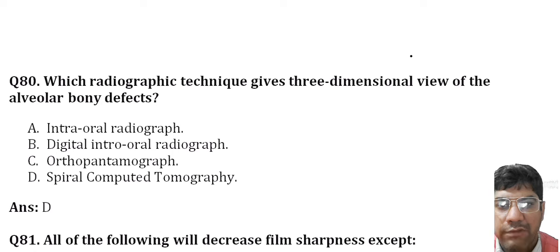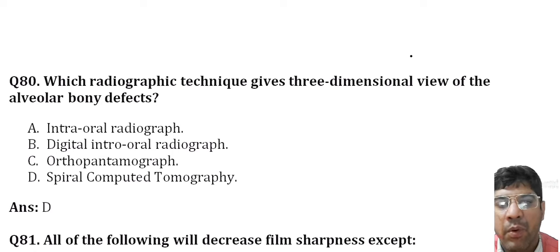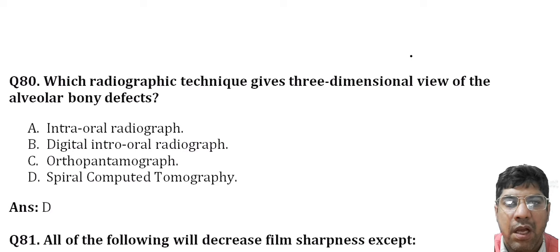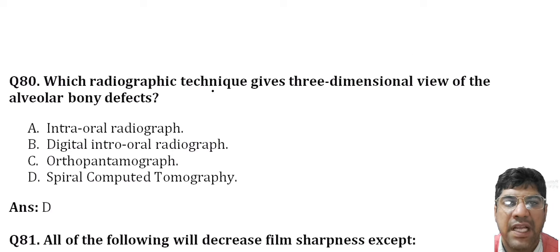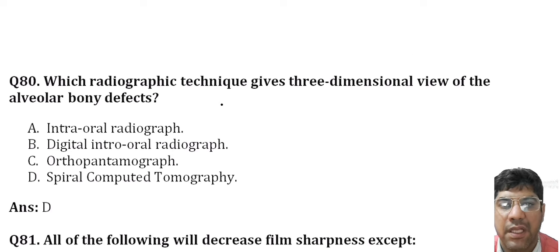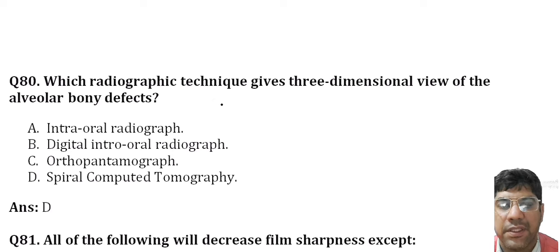The radiographic technique that requires a three-dimensional view of the alveolar bone defect is spiral CT. Spiral CT allows for assessment of alveolar bony defects and other anatomical structures in three dimensions, eliminating the superimposition of overlying structures.